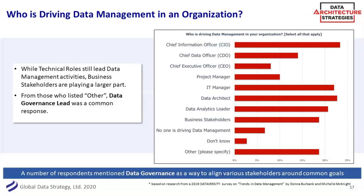To get data governance right you need all of those roles. The top 'other' that was written in was the data governance lead — that unicorn person that can motivate, champion, and really drive this initiative. For those of you who are a data governance lead, it can be a nice pathway up to chief data officer because you're really understanding all aspects of the business — coordinating, championing, doing, and really helping data be part of a data-driven business.